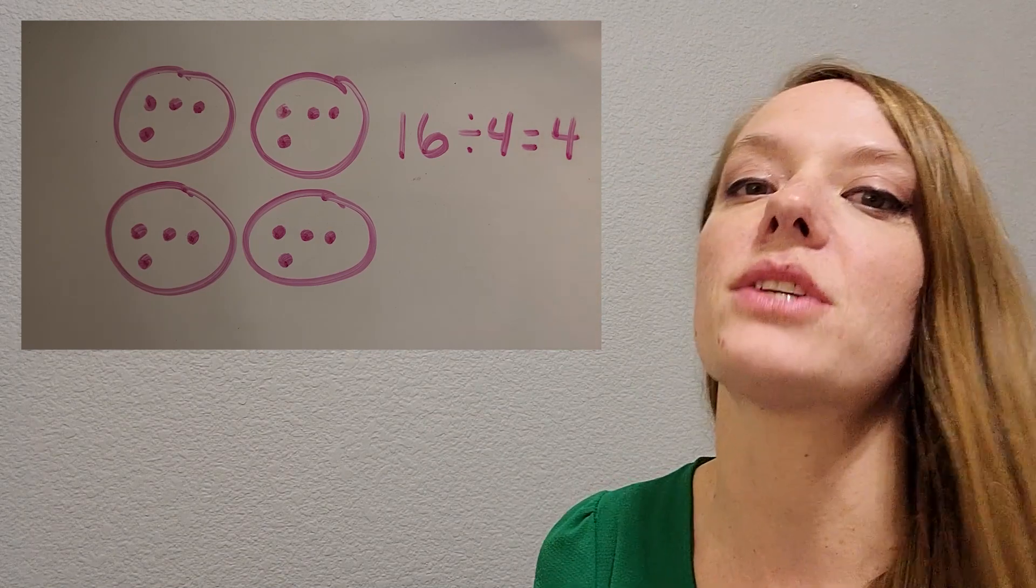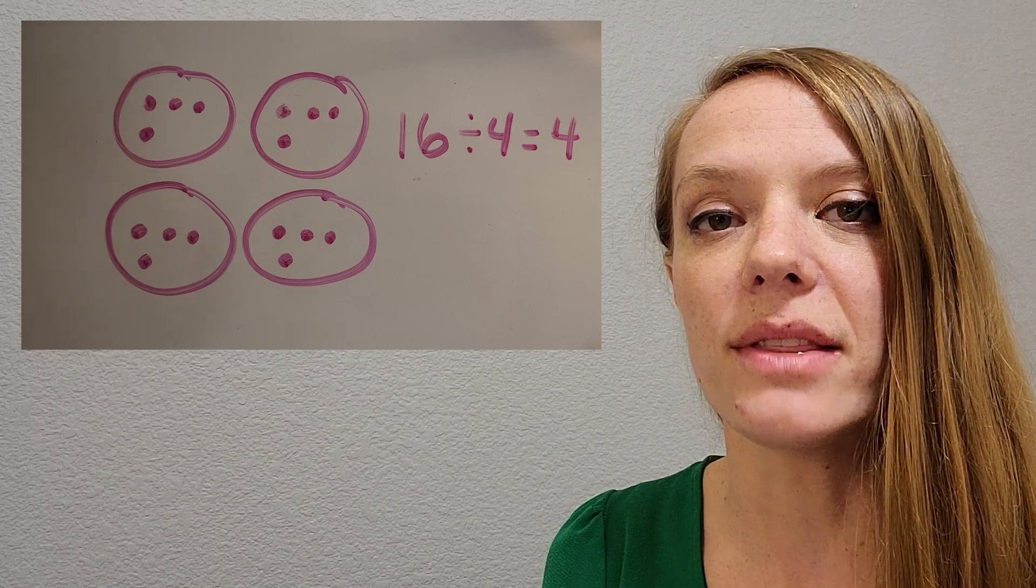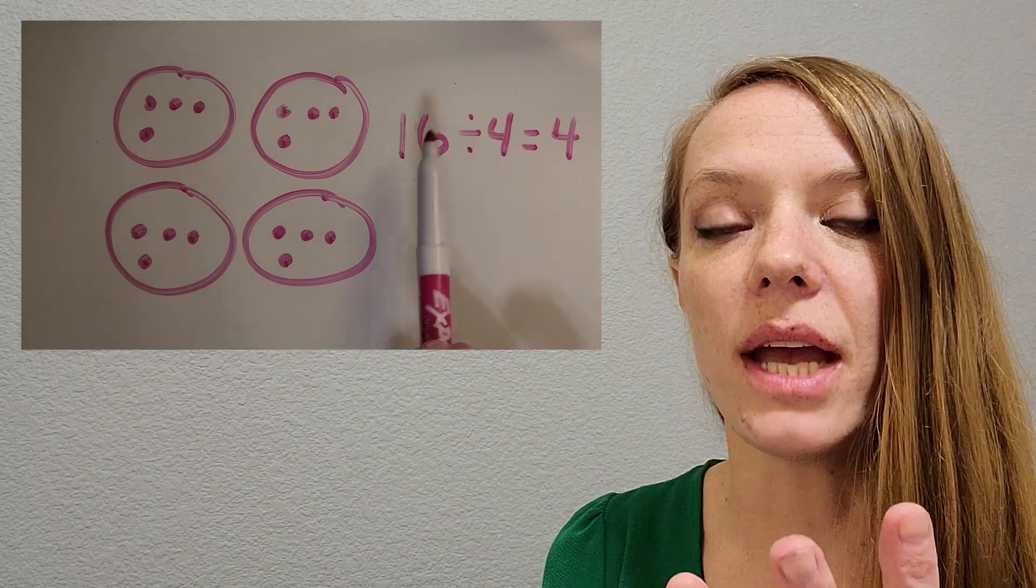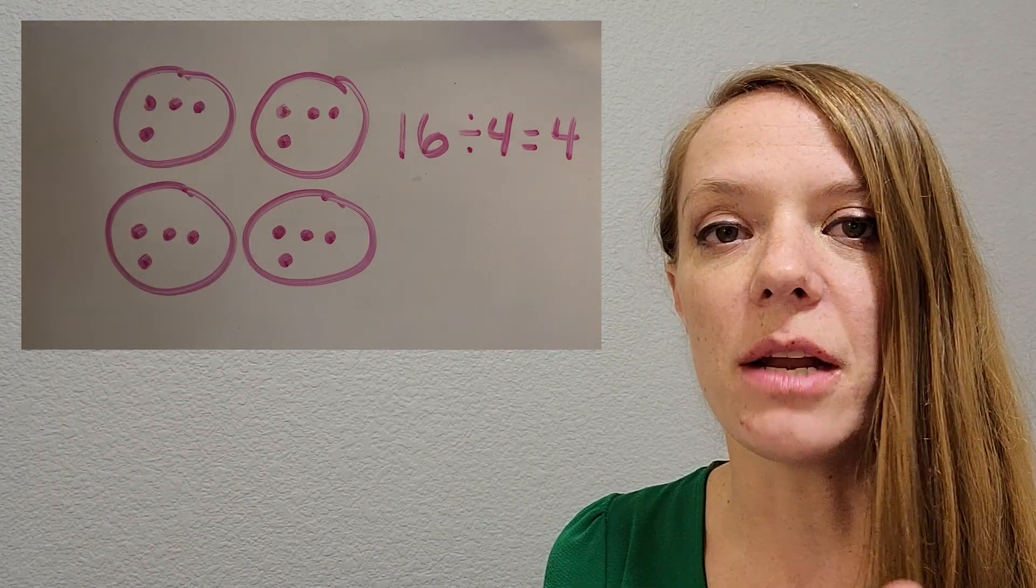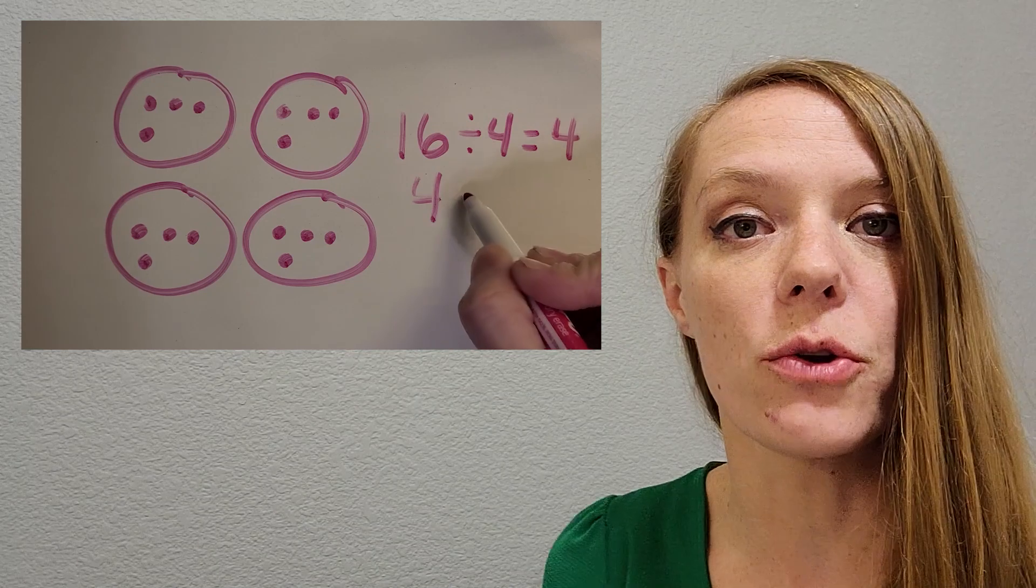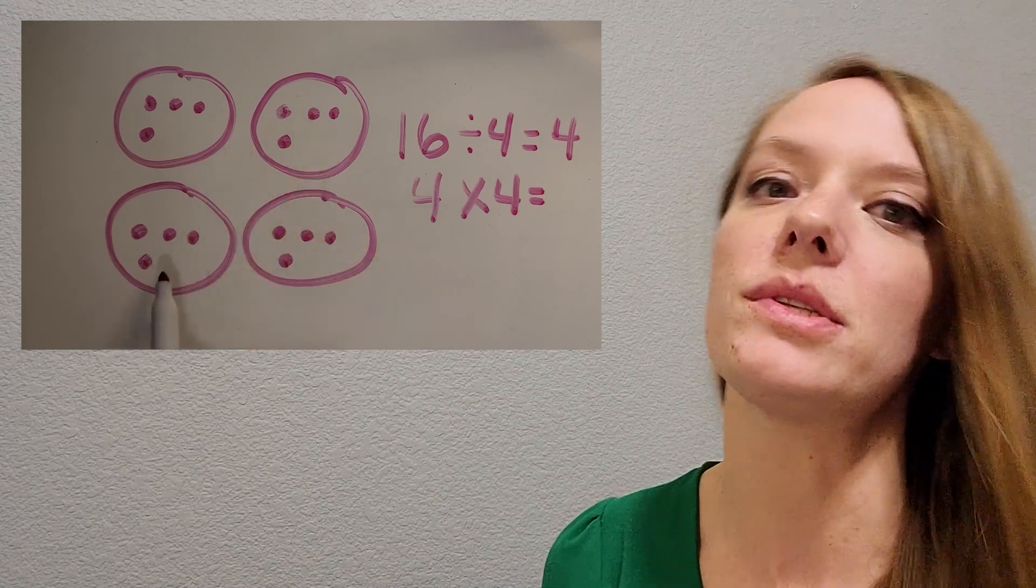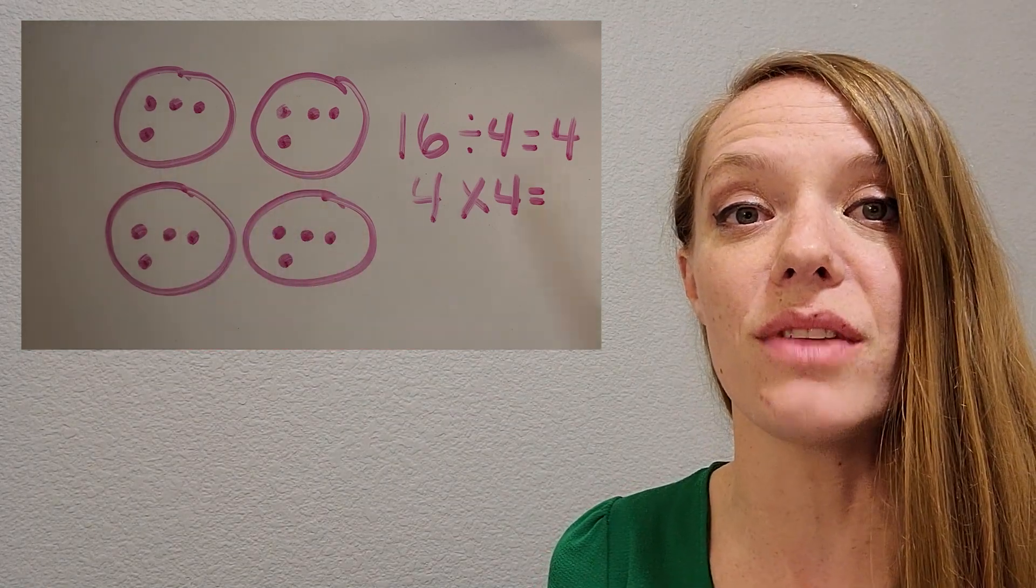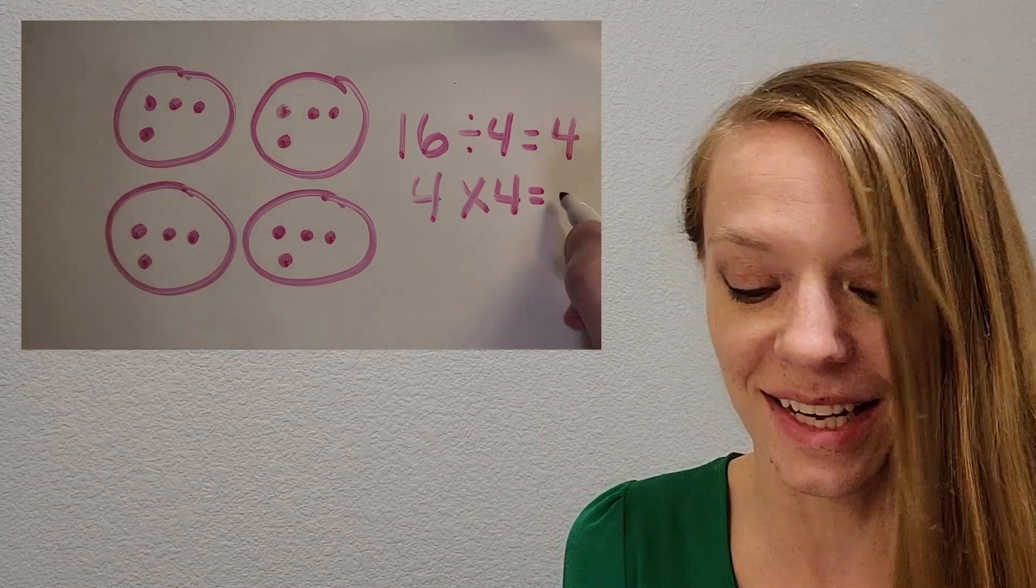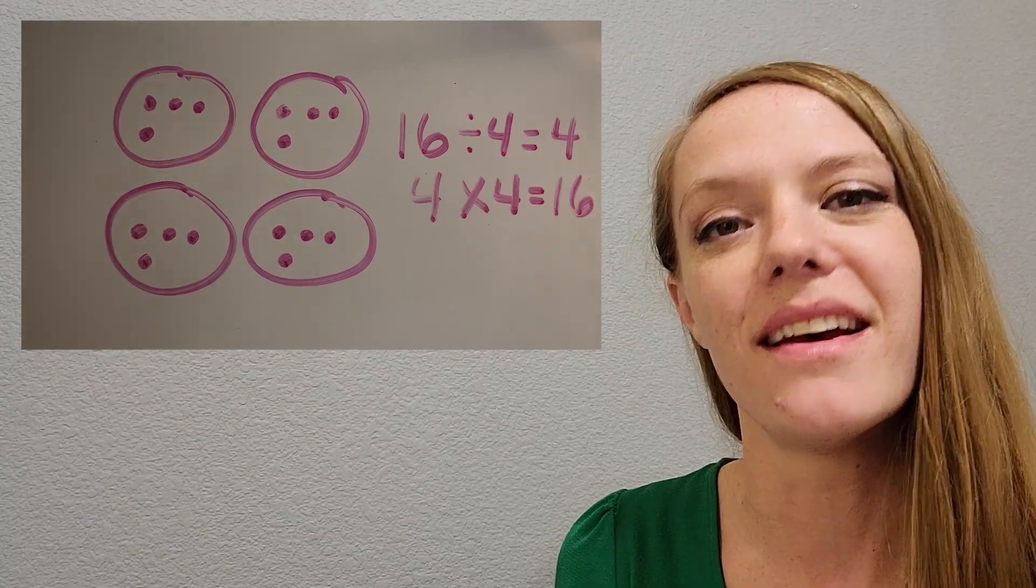And another way to kind of check your work is to think about fact families. So if you haven't thought about that before, a fact family is a group of three numbers that go together. So 16 divided by four is four. What do you think four times four is? Four groups of four. Oh, and you know what? It looks like our picture shows that. I'm seeing four groups of four. So what do you think? What's the total amount of dots? Okay, awesome. It's 16. So do you notice how those numbers go together? They're all part of the same fact family. Great job.